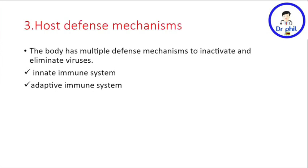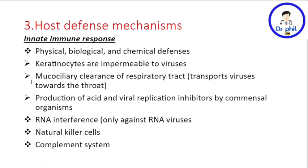How does our body protect us from viral infection? The body has multiple mechanisms to inactivate and totally eliminate the virus. This is possible through the innate immune system and the adaptive immune system.